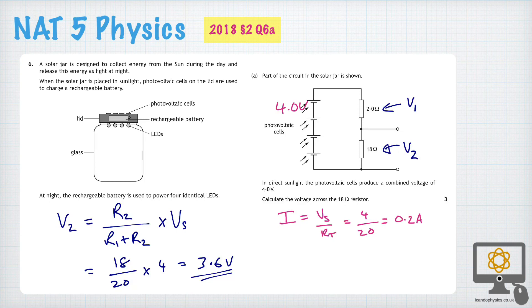And then you would use that current which is, of course, flowing through here of I equals 0.2 amps. It's flowing through this resistor and you know the value of the resistor is 18 ohms.